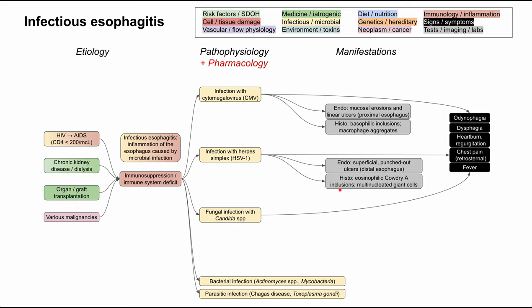On histology, CMV shows basophilic inclusions and macrophage aggregates. For herpes, you'll have eosinophilic Cowdry inclusions and multinucleated giant cells — differentiate the multinucleated giant cells from the macrophage aggregates between HSV and CMV. For Candida, on endoscopy you'll see a white-yellowish adherent plaque called pseudomembranes, and on histology you'll see pseudohyphae with visible spores, which is very characteristic for a fungal infection.